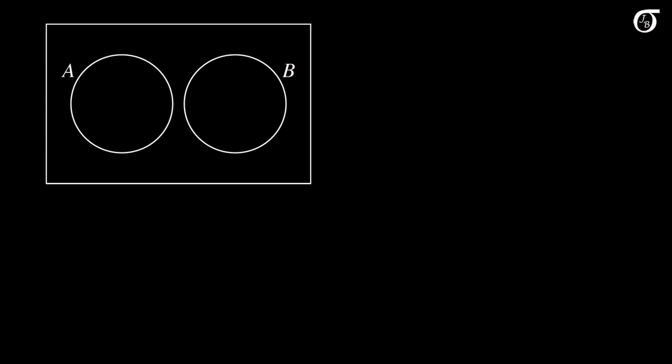Some students look at this and think that A and B are separate, that they're doing their own thing, and so they're independent. But that's not what independence means in a probability sense.